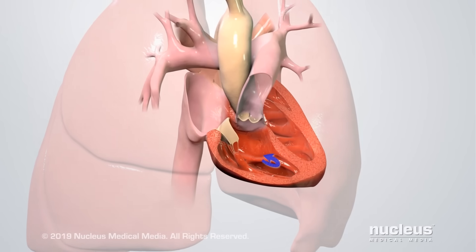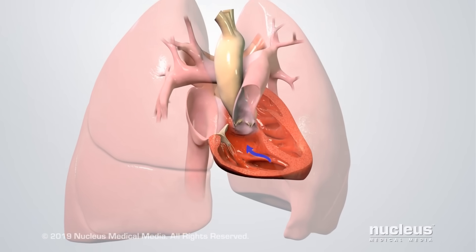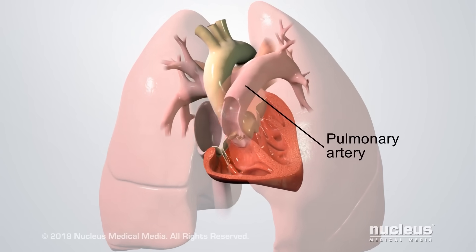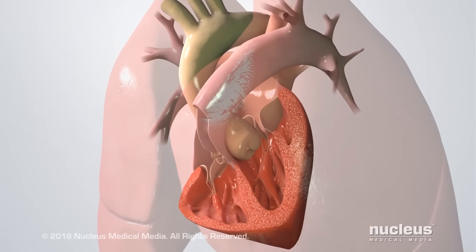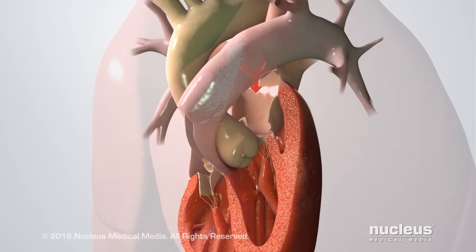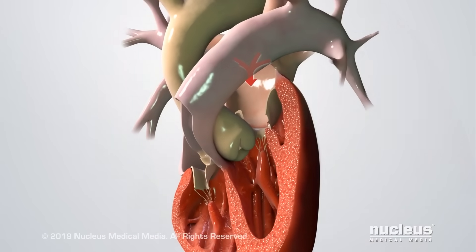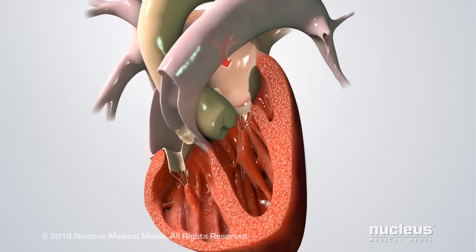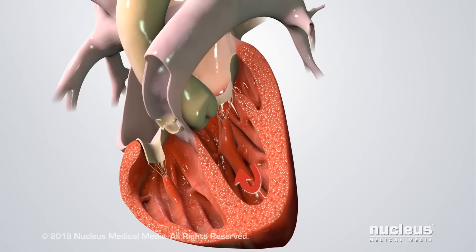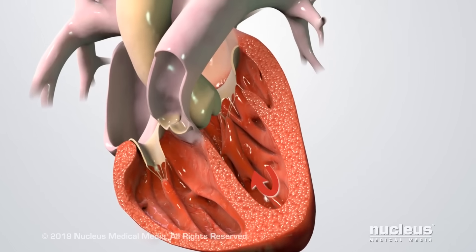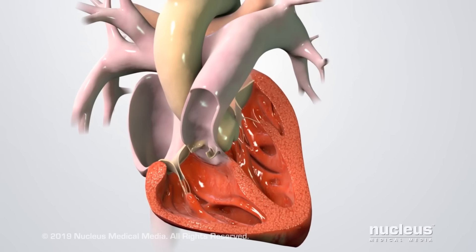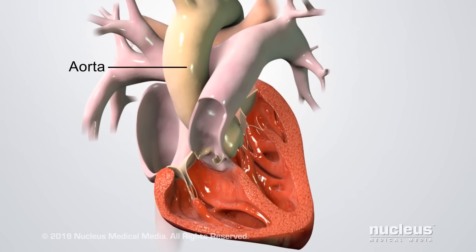Then the right ventricle contracts, sending blood to the lungs through the pulmonary artery. The blood picks up oxygen in the lungs, then returns to the left atrium. The left atrium contracts, filling the relaxed left ventricle with blood. And the left ventricle contracts to pump and deliver oxygen-rich blood to the body through the aorta.